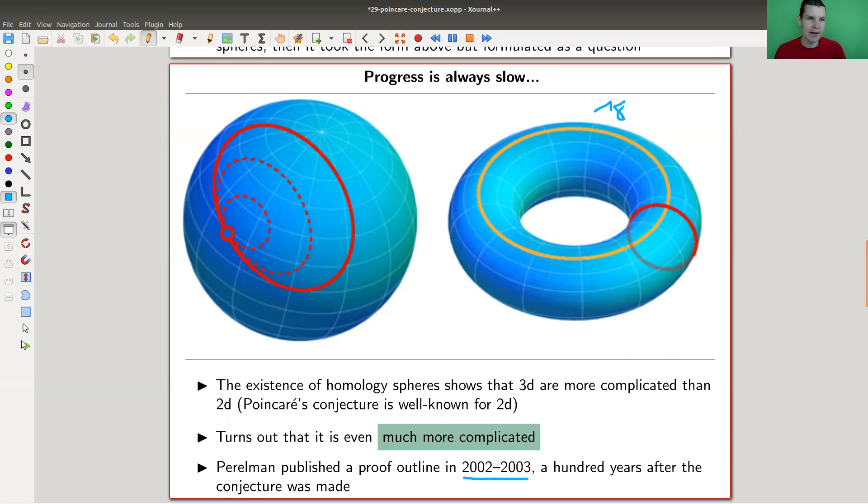It's still known as Poincaré's conjecture. It should be called Poincaré's big question, but it's called conjecture. Poincaré went from 'this is obvious' to being very careful - the question is way weaker than a conjecture.